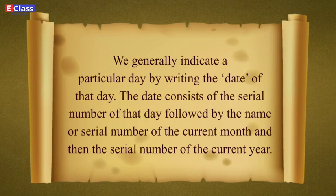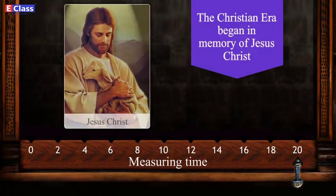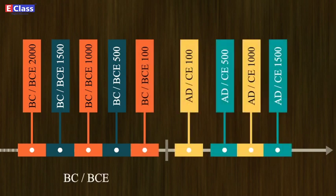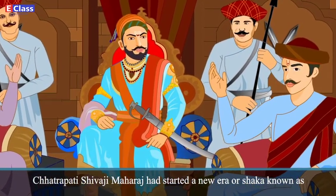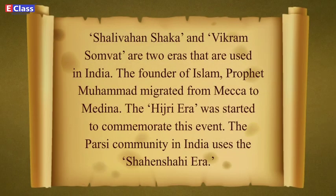There are other methods too. It is an age-old custom to start a new era to commemorate a special event, such as the coronation of a great king. Chhatrapati Shivaji Maharaj started a new era known as Rajabhishek Shakh in 1674 AD to commemorate his coronation. Shalivahan Shakh and Vikram Samvat are two eras used in India. The founder of Islam, Prophet Muhammad, migrated from Mecca to Medina, and the Hijri era was started to commemorate this event. The Parsi community in India uses the Shahanshahi era.